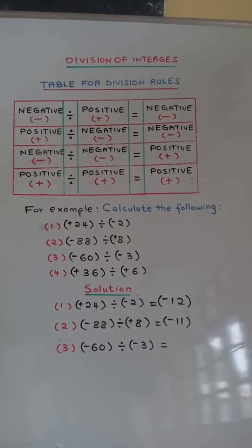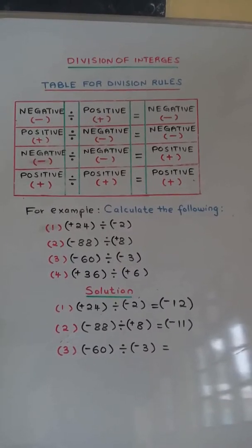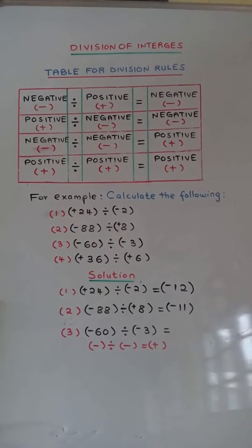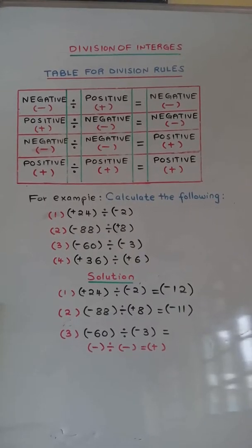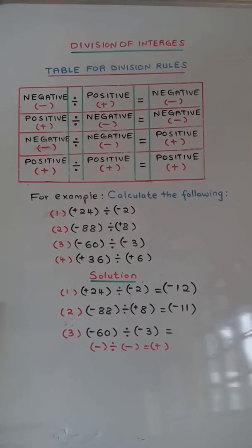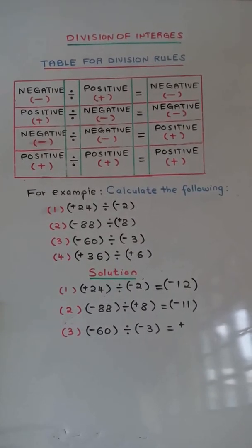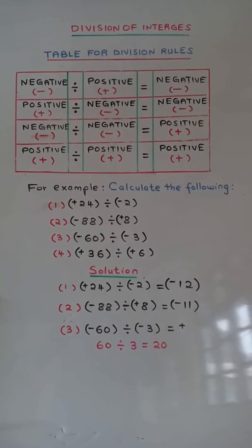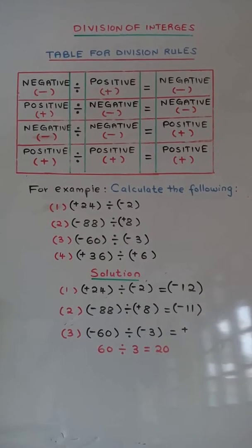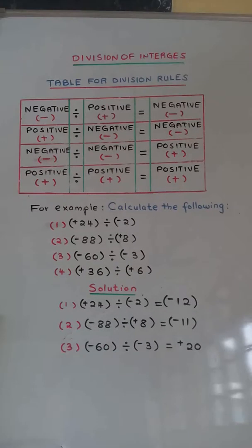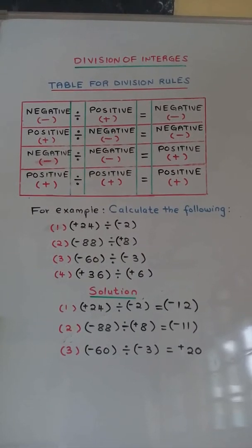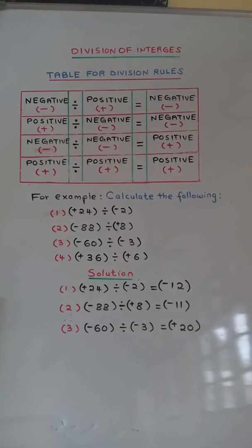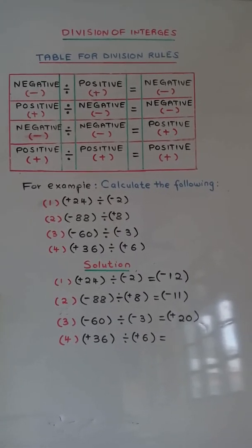Number 3: negative 60 divided by negative 3. Negative divided by negative is equal to positive. 60 divided by 3 is equal to 20, so the answer is positive 20.